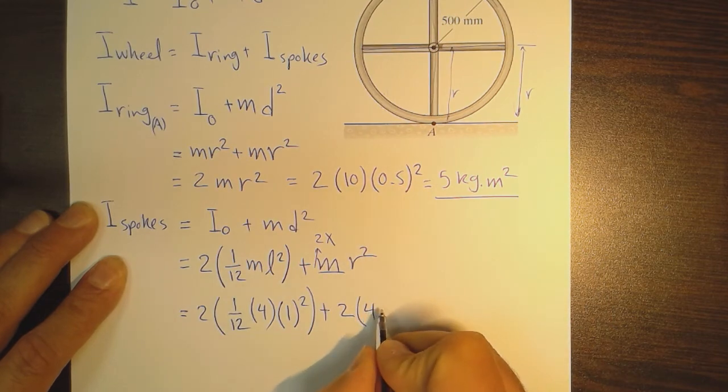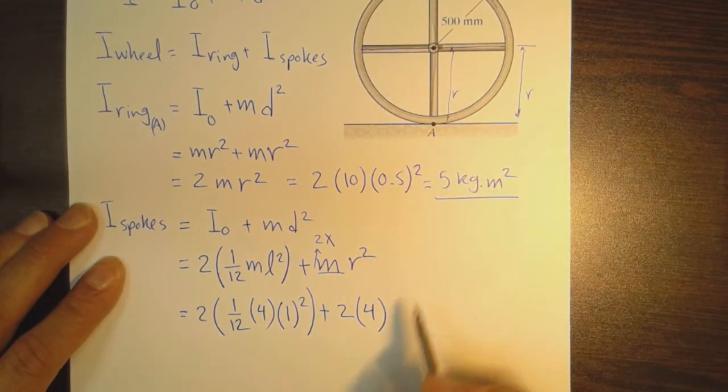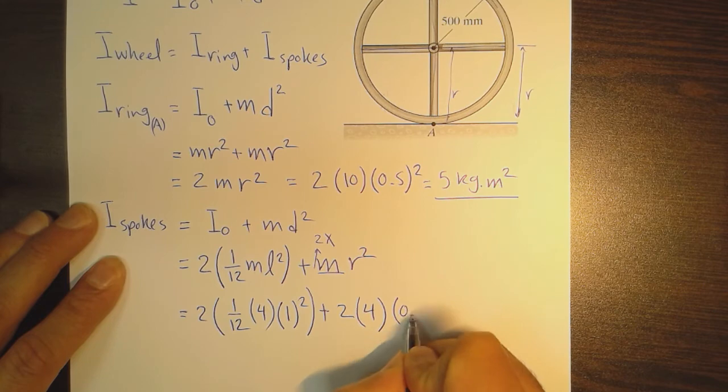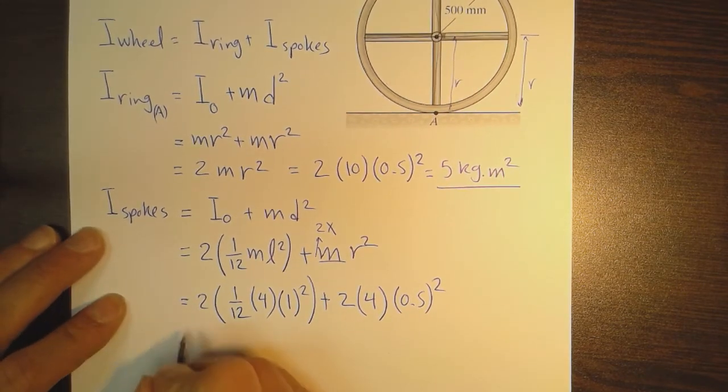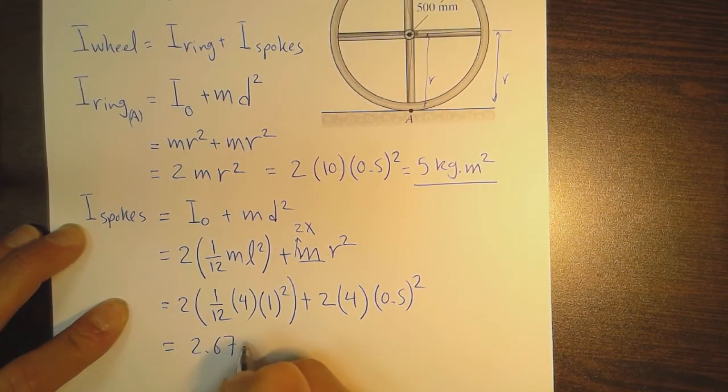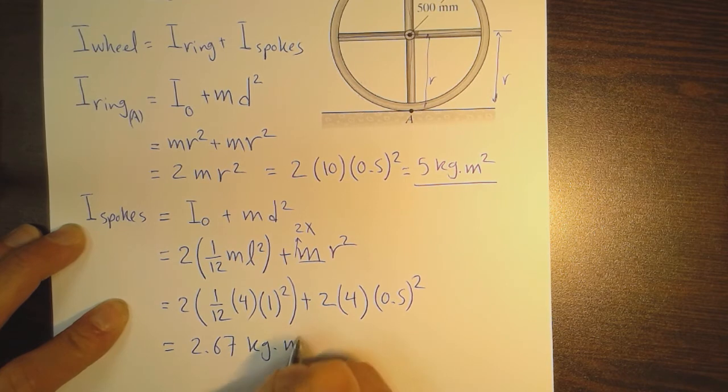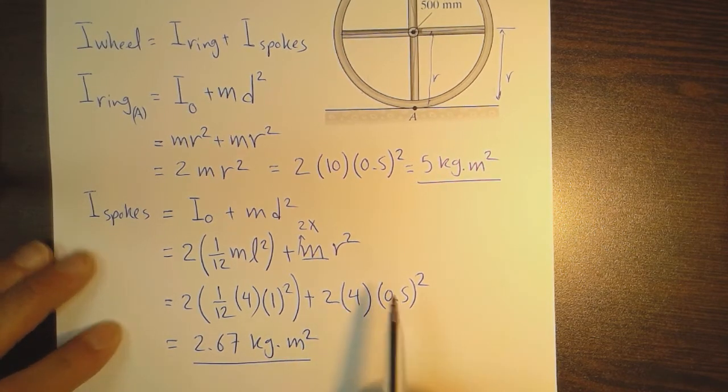Plus 2 × 4 kg (because it's now two spokes making one long rod) times the distance (0.5)². This gives us 2.67 kg·m². This is the moment of inertia for the spokes.